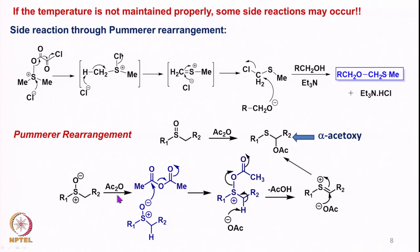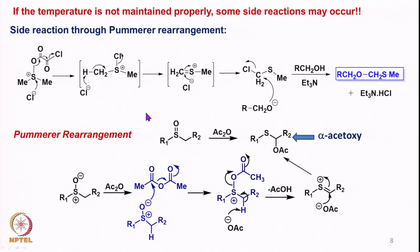In the Pummerer rearrangement, DMSO reacts with acetic anhydride: the oxygen reacts with the carbonyl carbon of acetic anhydride to form an intermediate, and the acetate ion is released. The acetate ion then removes the proton from the methyl group, acetic acid leaves, and a sulfonium ion intermediate forms. Acetate attacks onto this carbon to give the alpha-acetoxy sulfide — analogous to the alpha-chlorosulfide formed in the Swern side reaction. This similarity explains why maintaining low temperature in Swern oxidation is critical.